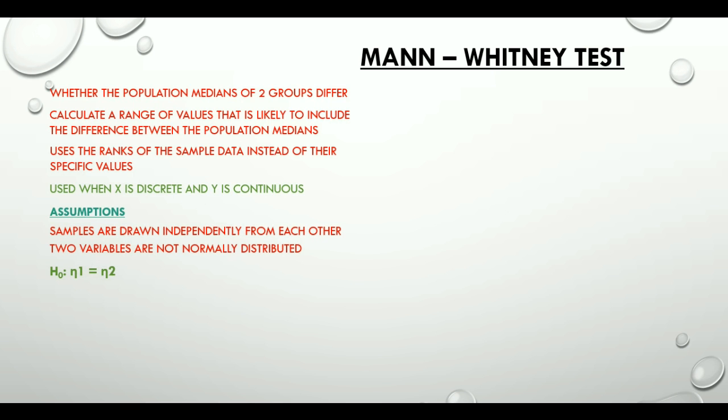Null hypothesis for a Mann-Whitney test is eta1 equals eta2 and alternative hypothesis could be either not equal to, greater than or less than depending on whether it is a two-tailed or one-tailed test. Eta1 is the median of the first population and eta2 is the median of the second population.